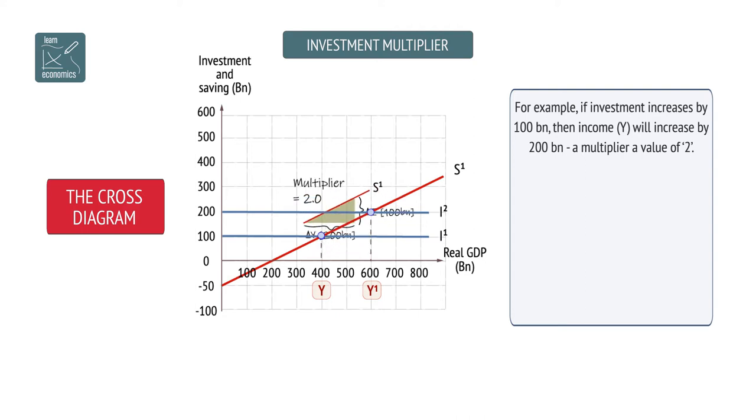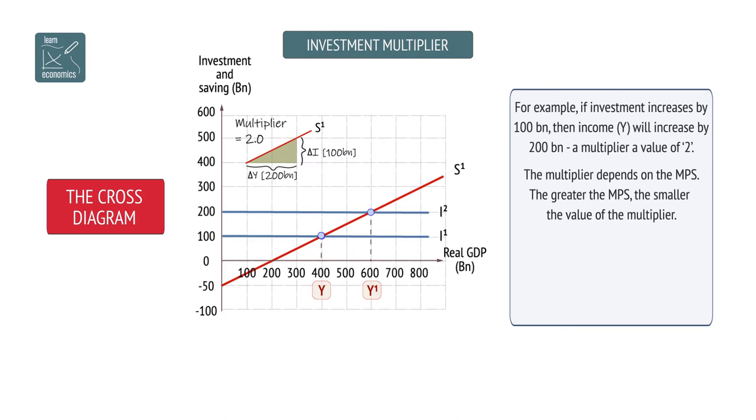What is key here is to see that the value of the multiplier depends on the marginal propensity to save, or MPS for short, which determines the gradient of the savings line.